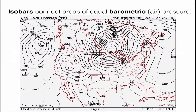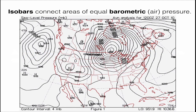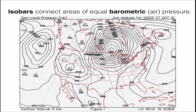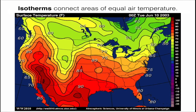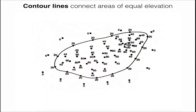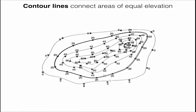Isobars connect areas of equal air pressure — we call that barometric pressure. There are also isotherms, which connect areas of equal air temperature — we were just looking at isotherms across the United States. And there are contour lines, which connect areas of equal elevation. Those three groups — isobars, isotherms, and contour lines — are the most common types of field data we'll be dealing with.